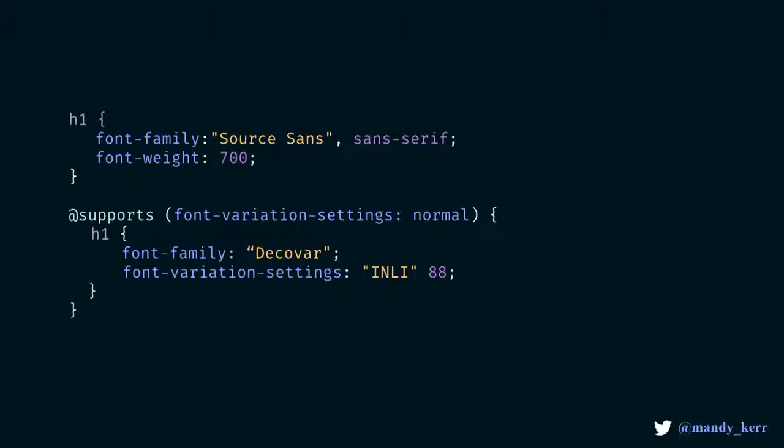If you need to support older browsers, we can make use of CSS feature detection to check whether or not variable fonts are supported. And if they are, we can load in the styles that we need for our font. Then we just use our standard fonts as our fallback. I know that this means they're not going to look the same, but that's okay — we don't have to have everything looking the same in all browsers all the time. CSS feature detection makes this really easy for us.